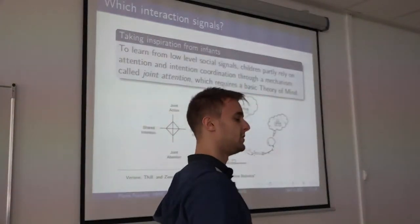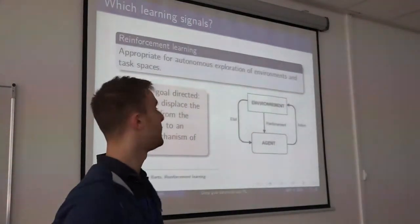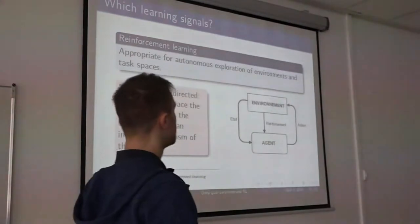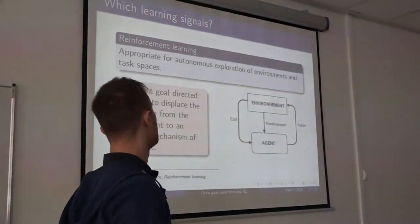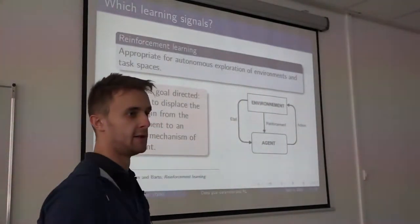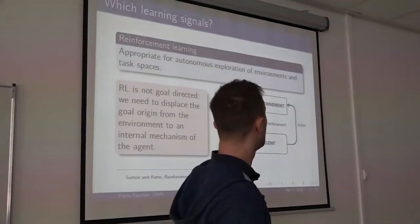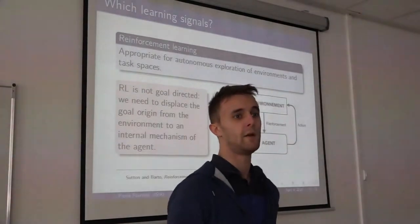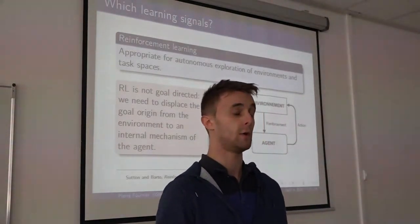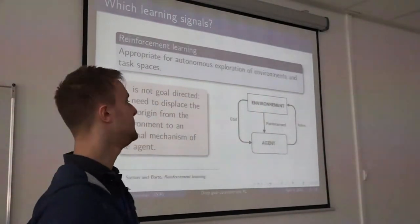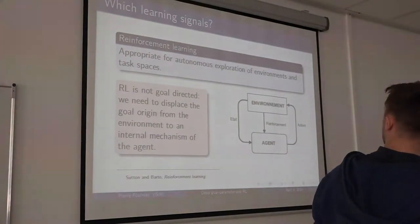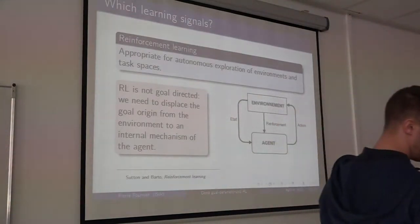The idea is to have the agent understand the intentions of a caregiver and what to attend to. For the learning part, I chose reinforcement learning because it's one of the most studied fields for autonomous learning. However, there's a problem: standard RL is not goal-directed in itself. The reward comes from the environment and is forced upon the agent, so once you've designed an environment, you have one reward, one goal, and the agent has no capability to choose its own goal.